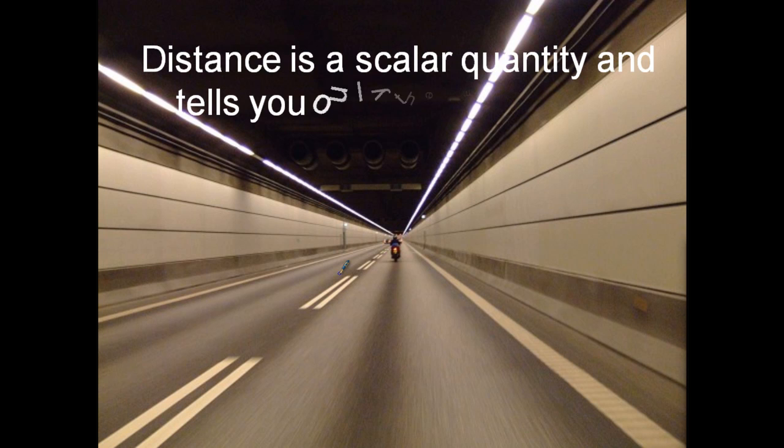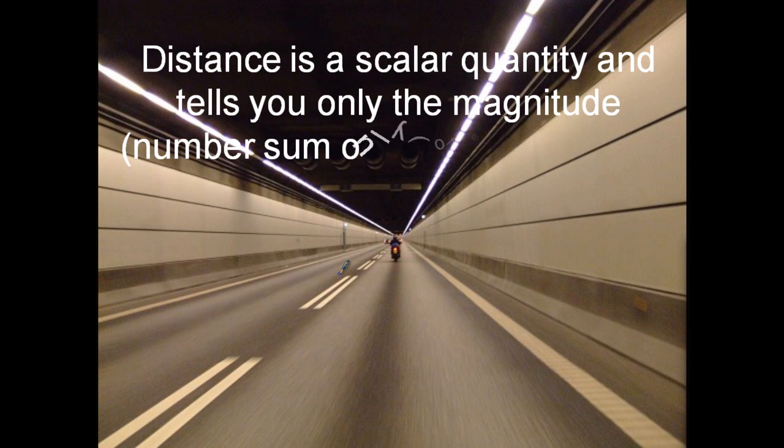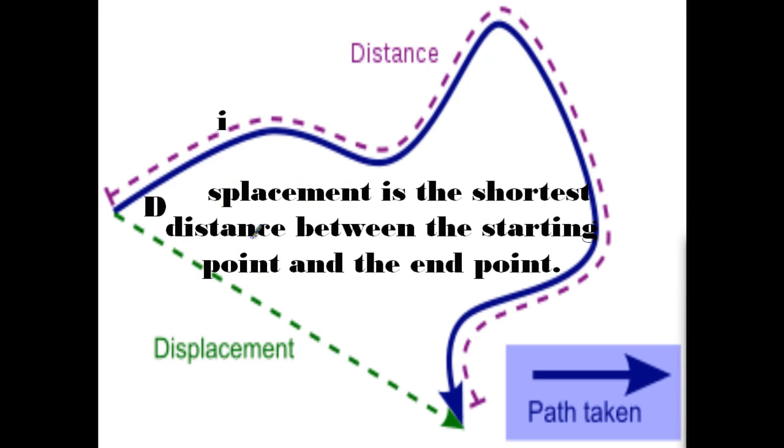So distance is a scalar quantity and tells us only a magnitude. It's only the number. So distance is a scalar. Scalar, there's also vectors. Remember, scalar is just the size. It's just the magnitude of something. We also have vectors which are magnitude and direction. Have you ever seen Despicable Me, the villain vector? That's his name because he's committing crimes of both direction and magnitude.